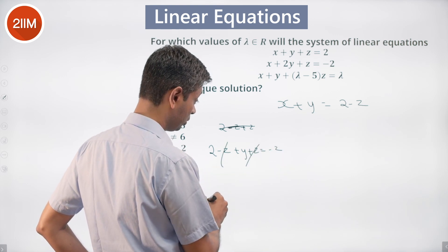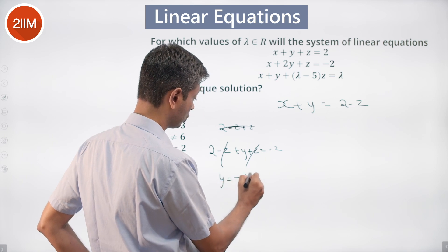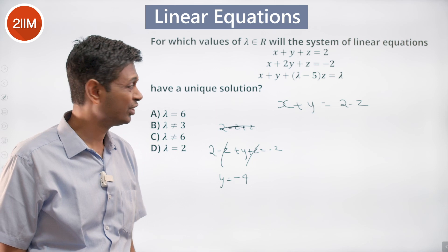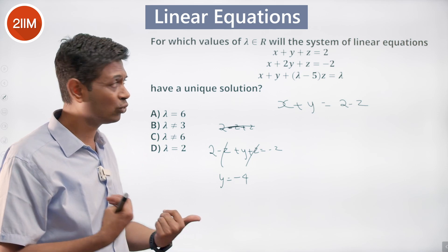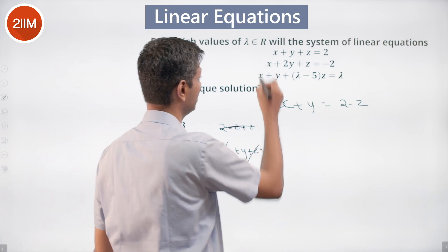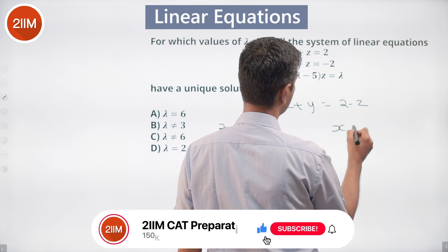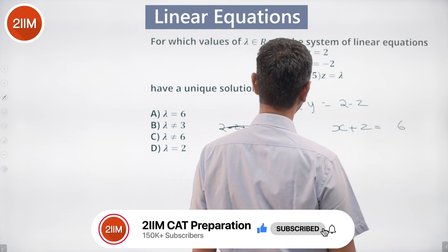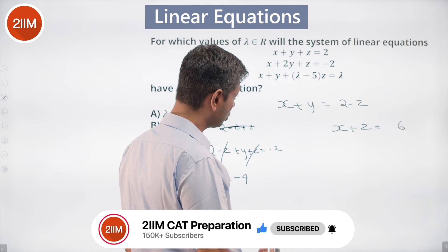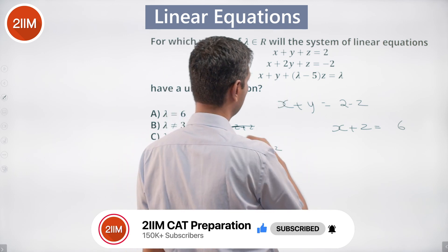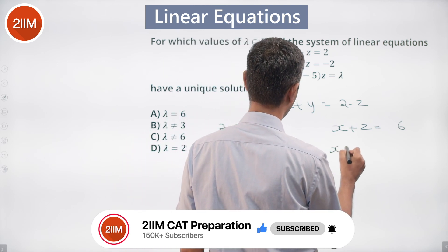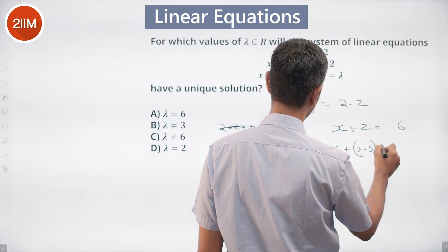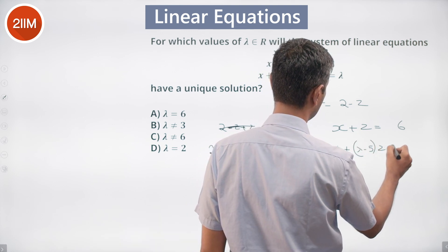Subtracting the first equation from the second, we get y equal to minus 4 straight away. With y equal to minus 4, the first equation becomes x plus z equal to 6, and the second equation also reduces to x plus z equal to 6.